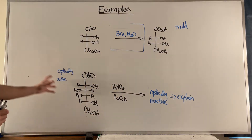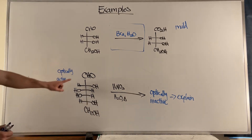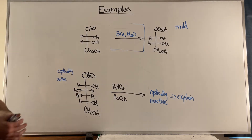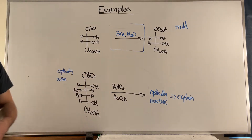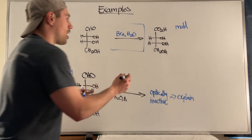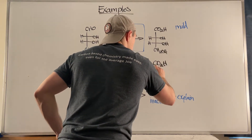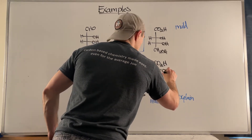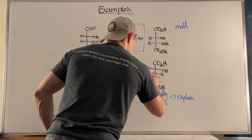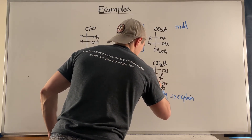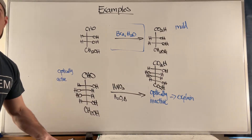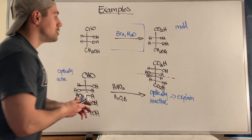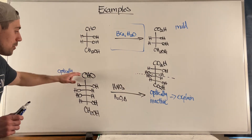For the second example, we start out optically active — we have stereocenters, so that's totally fine. However, we treat with nitric acid, H2O, and heat, and end up optically inactive. Let's draw the product. We know we have carboxylic acids on top and on bottom, so I'll draw those in. Going right, left, and then left, right — and maybe you're starting to see it.